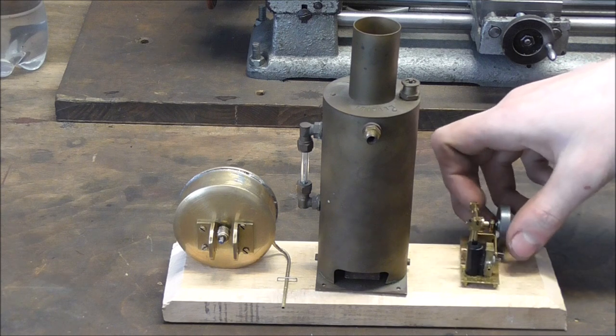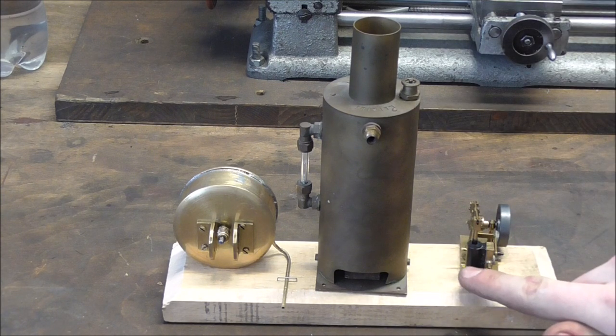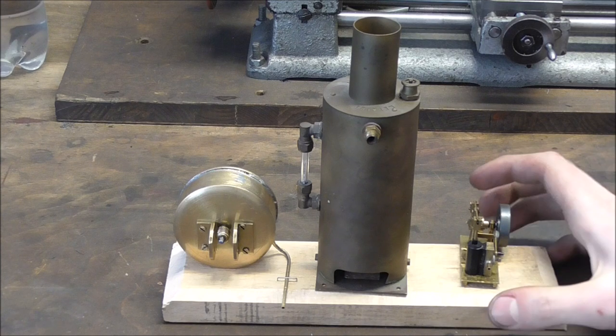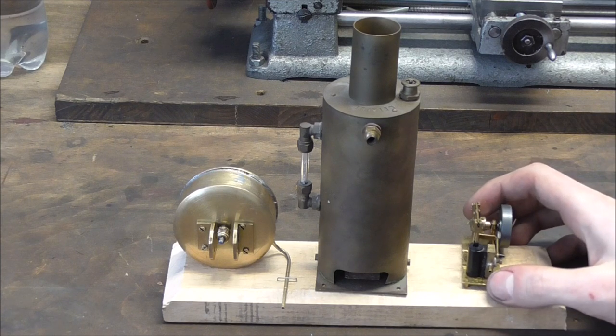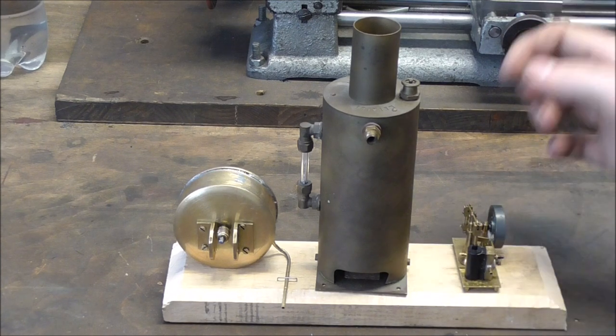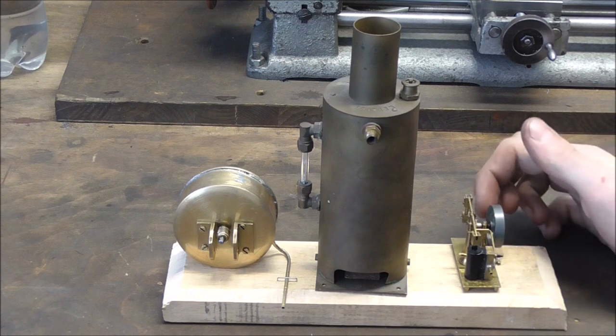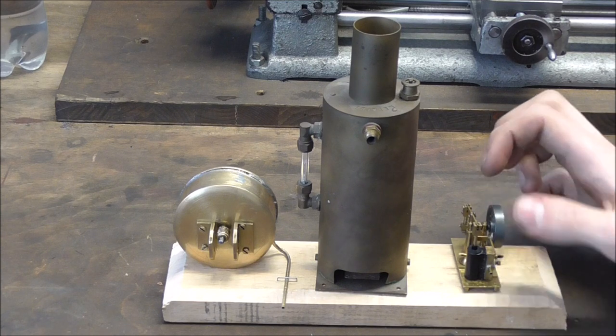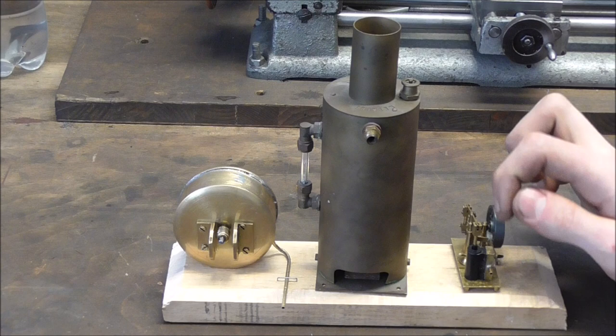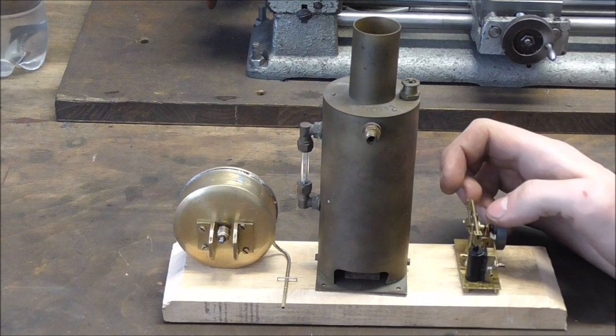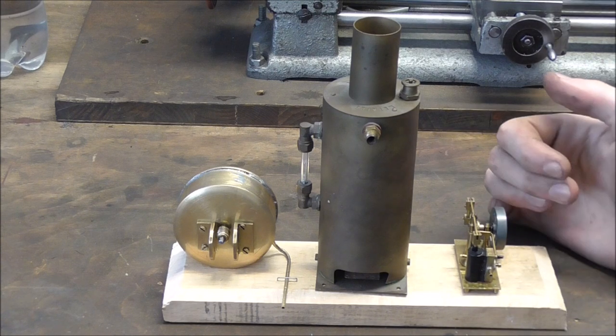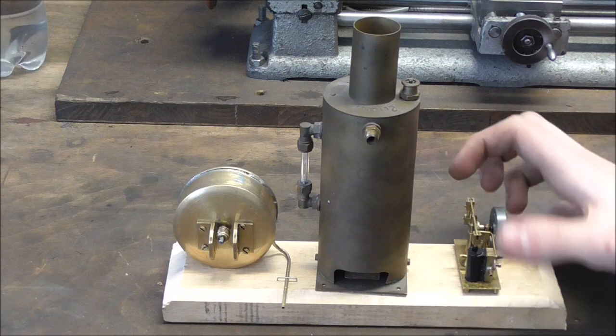You see, the piston or the cylinder rather is aluminum, the valve chest is brass. They're both glued together and the seam has just gotten old over time and is leaking like crazy.